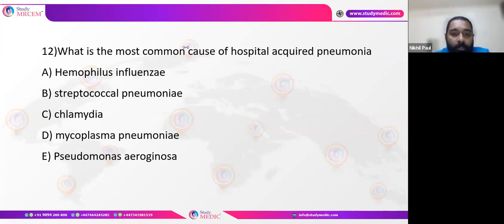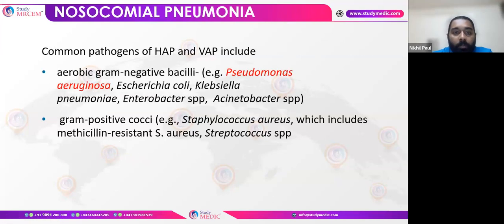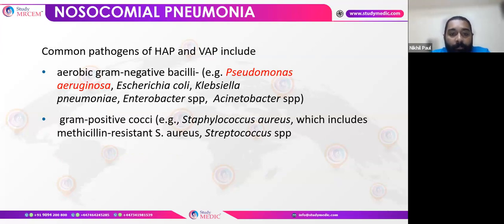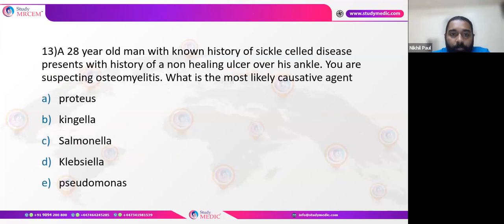Question: what is the most common cause of hospital-acquired pneumonia? The answer is Pseudomonas aeruginosa. Common pathogens in hospital-acquired and ventilator-associated pneumonia include aerobic gram-negative bacteria — Pseudomonas, E. coli, Klebsiella, and Enterobacter species — as well as gram-positive Staphylococcus aureus, with Pseudomonas being most common.